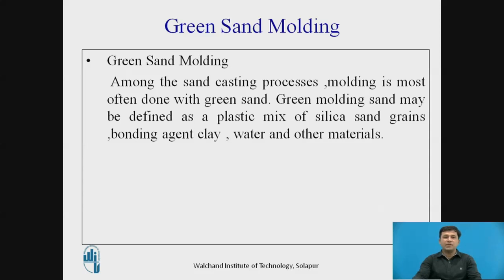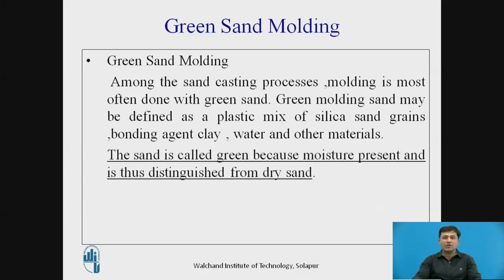Whenever we want to cast something, the moulding process involves a mixture of silica sand. Clay is used as the bonding agent, water to a certain extent is used, and other different materials as required. The sand is called Green because of its moisture content present, and hence it is clearly distinguished from the dry sand. In dry sand moulding, the sand is totally dry and oven-dried.